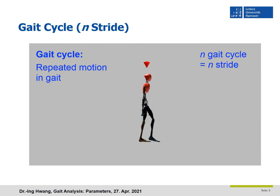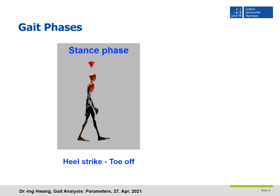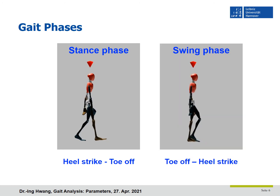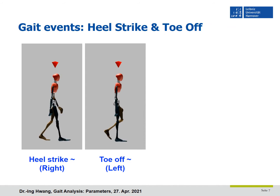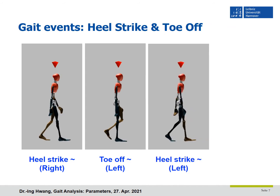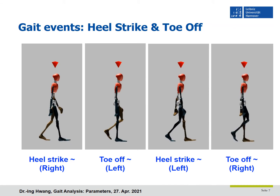We can observe the gait cycle or stride again and again during walking. One gait cycle is divided into two phases: the stance phase and swing phase. The stance phase is from heel strike to toe off — please look at the right blue leg of the avatar. The swing phase is from toe off to heel strike. The period of the stance phase is also called contact time. Heel strike happens when the initial contact is made between the heel and ground after the swing phase. Toe off happens when your toe leaves the ground after the foot pushes the ground to move forward. In a gait cycle, two heel strikes and two toe offs exist because we humans have two legs, right and left.